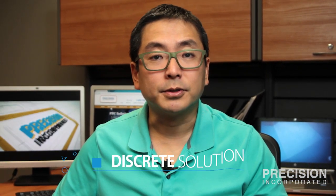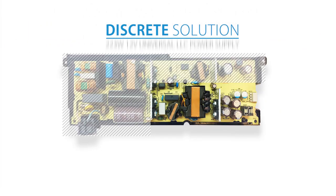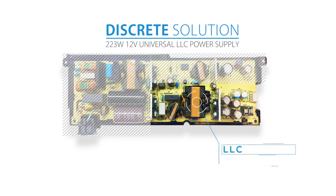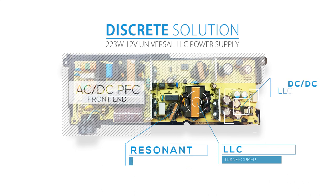Generally speaking, there are two ways to design an LLC magnetics. The first one is a discrete solution, which requires two separate components. In addition to the LLC transformer, it also requires a resonant inductor. It is most easily done, but at the same time, it is more costly and takes up more real estate because of the additional components.